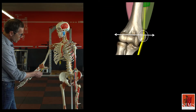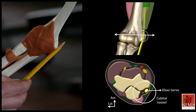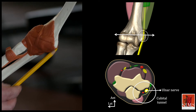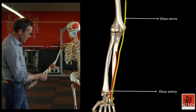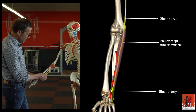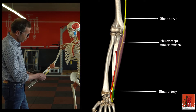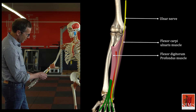The ulnar nerve runs on the posteromedial aspect of the elbow inside an osteofibrous tunnel, the cubital tunnel, which is a possible source of entrapment. It then appears at the proximal third of the forearm between the two heads of the flexor carpi ulnaris, and splits into two motor branches: one for the flexor carpi ulnaris and the other for the flexor digitorum profundus.